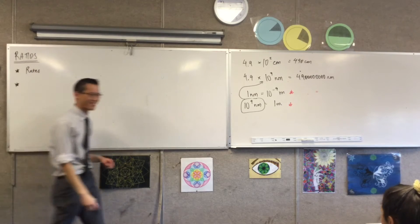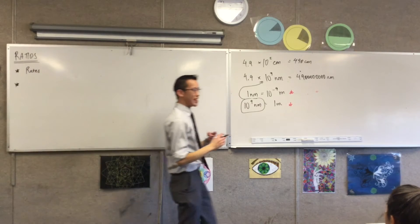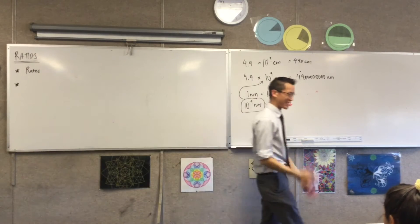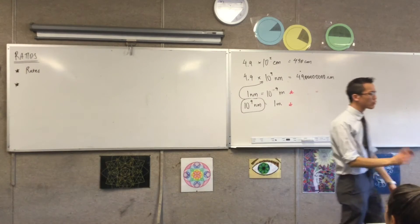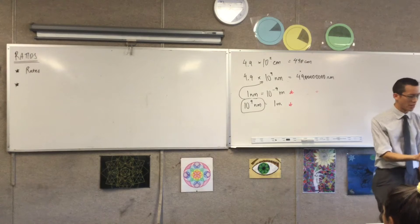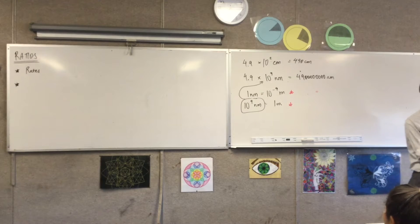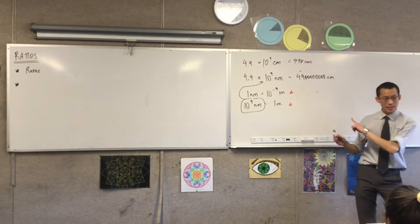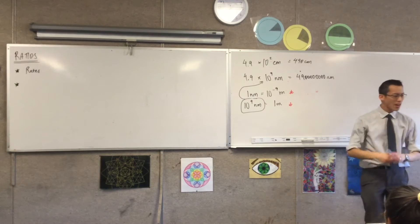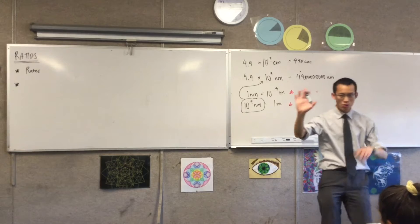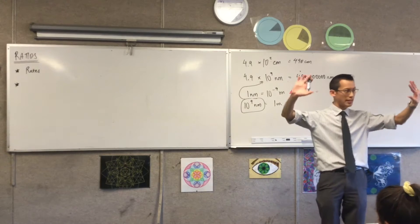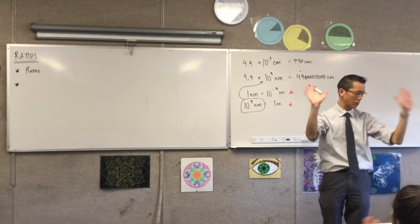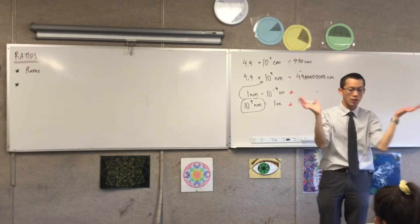Okay, so let's repeat that again slower. You don't need to write this again — you have this in your book already. But we talked about rates, and rates are about when you've got two quantities that are changing in relationship to each other.